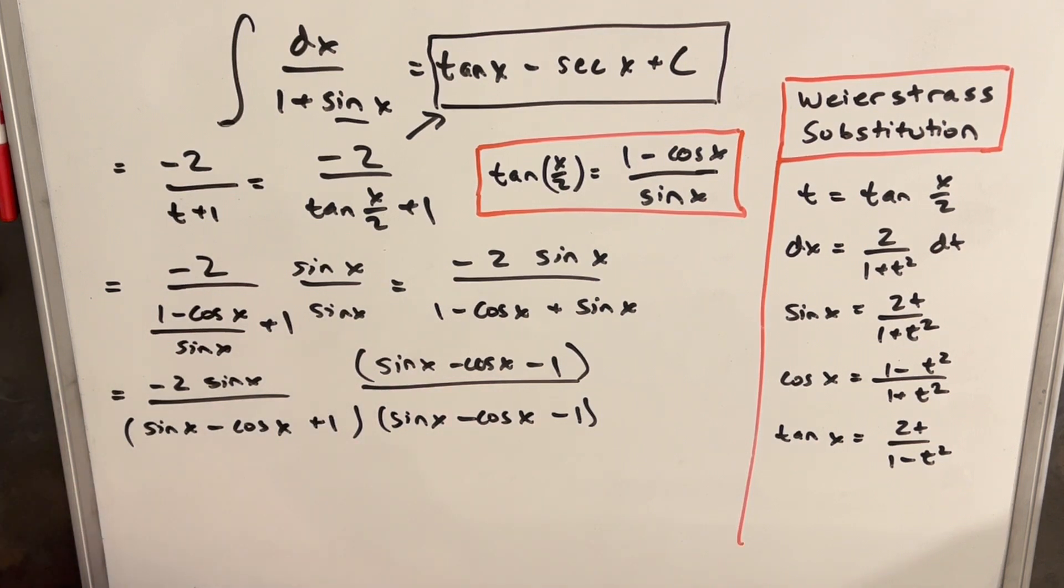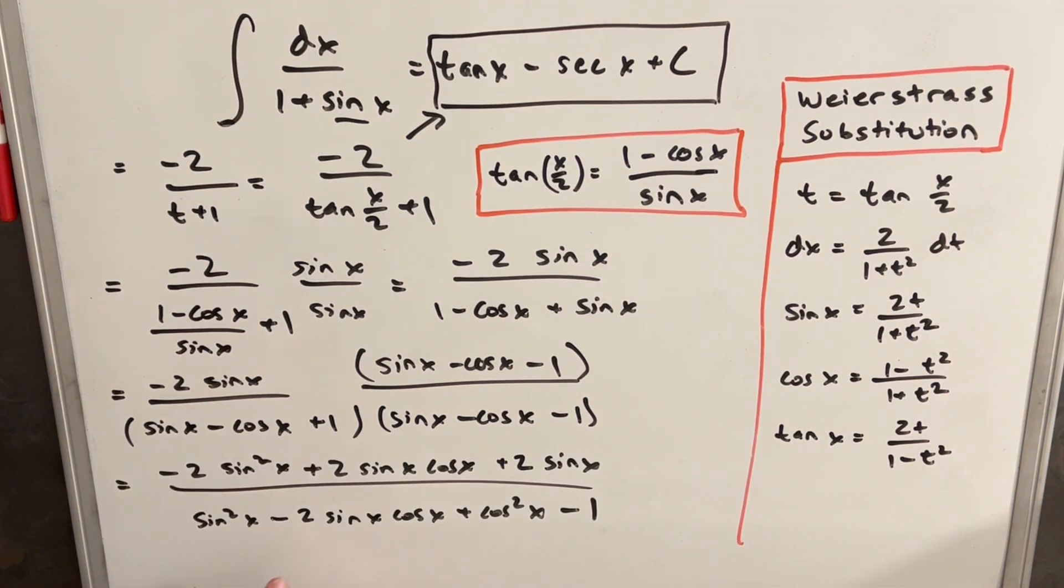So then now all we need to do is multiply all this stuff out. Doing that looks like we made a mess. But the good thing about this is actually, notice that sine squared plus cosine squared, this piece is just one. And then we have a one here, which we subtract off. So we essentially can cancel this, this, and this.